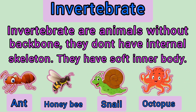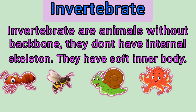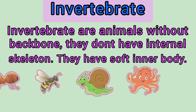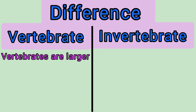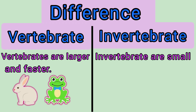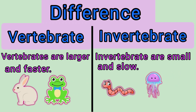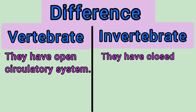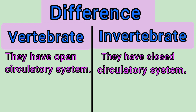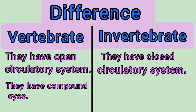Snail and octopus are also invertebrates — they don't have a skeleton. How do you tell the difference between vertebrate and invertebrate animals? Vertebrates are larger and faster. Invertebrates are small and slow. Vertebrates have an open circulatory system, while invertebrates have a closed circulatory system. Invertebrates have compound eyes.